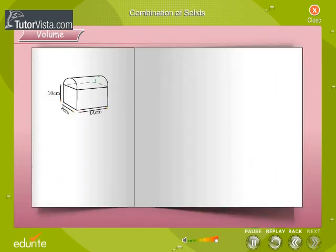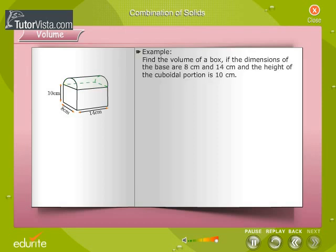Consider a box with a curved lid. It is shaped like a cuboid surmounted by a half cylinder. The volume of the box is equal to the sum of the volumes of the cuboid and the half cylinder. For example, let's find the volume of a box if the dimensions of the base are 8 cm and 14 cm and the height of the cuboid portion is 10 cm. Volume of the box = volume of the cuboid + volume of the half cylinder.